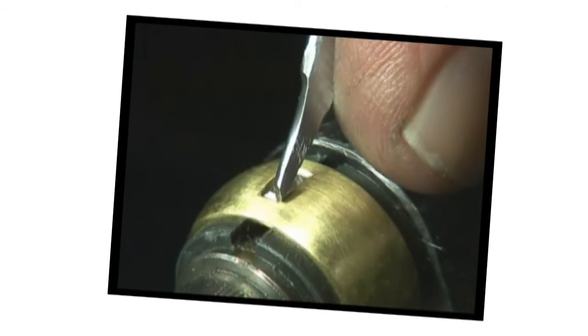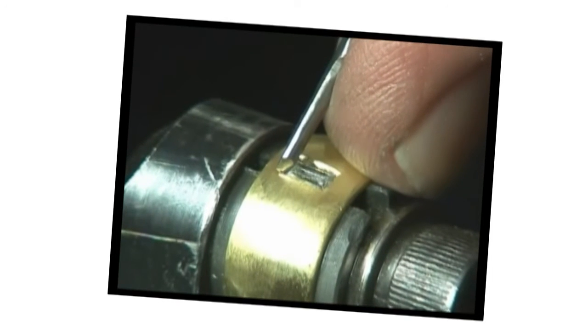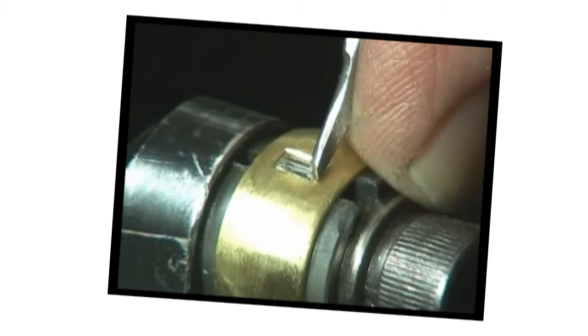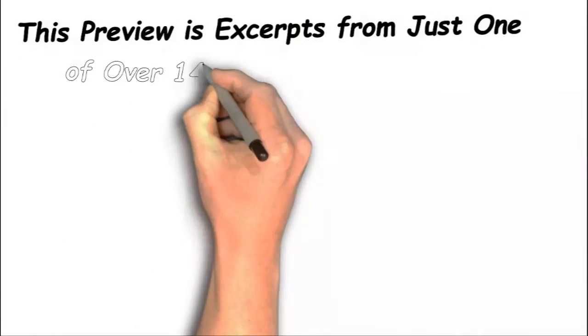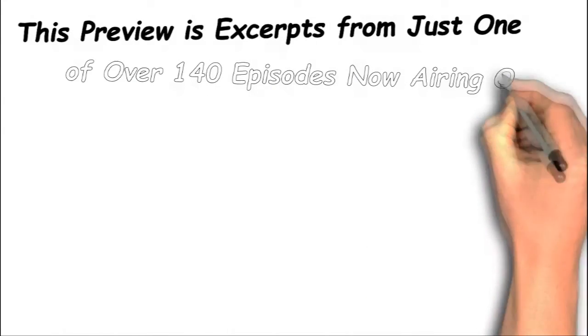And then as the last step, go over the burnished edge with a highly polished graver to get a nice smooth reflective surface. This preview is excerpts from just one of over 140 episodes now airing online.